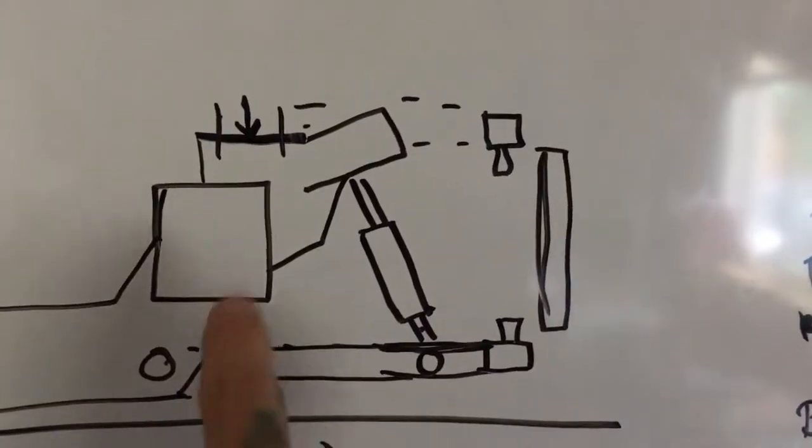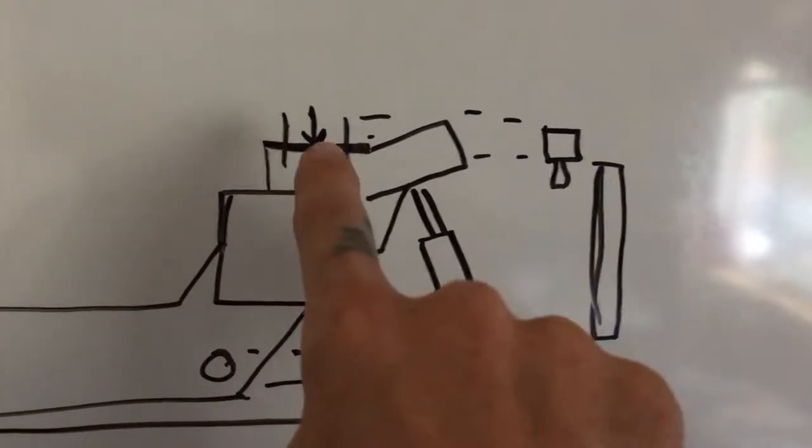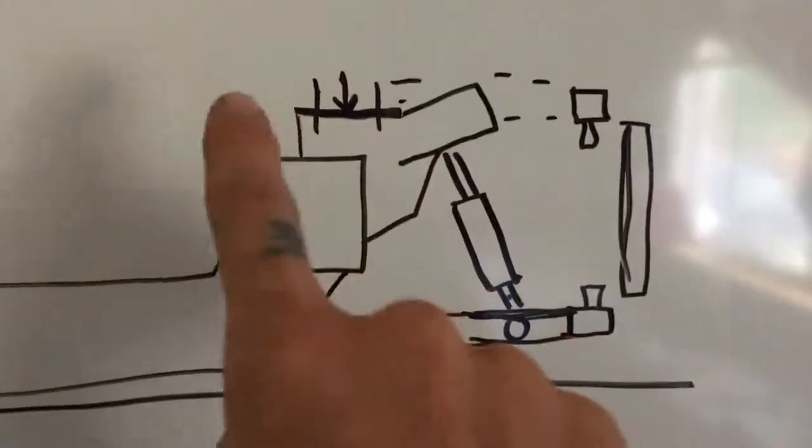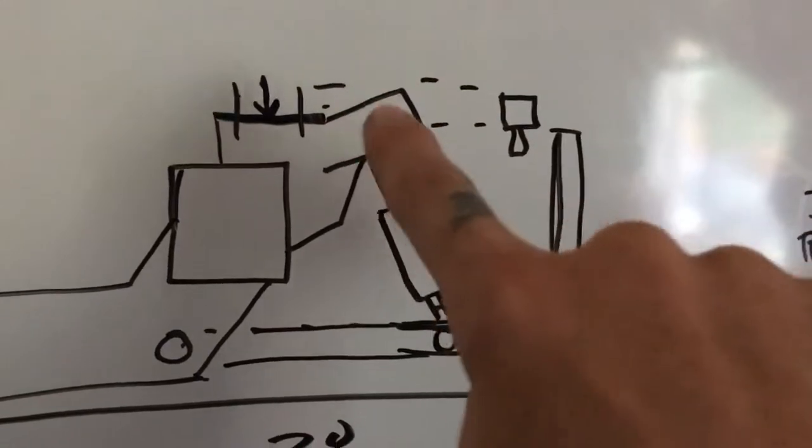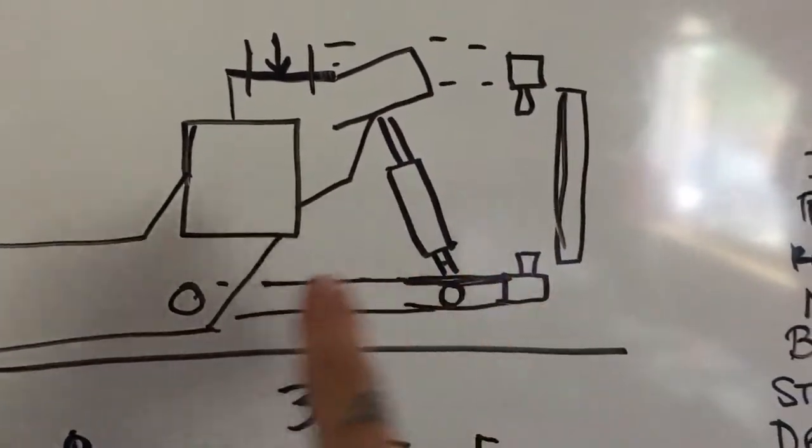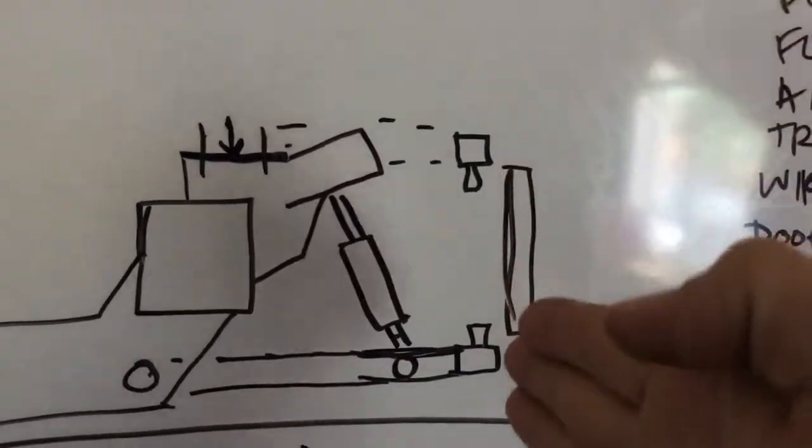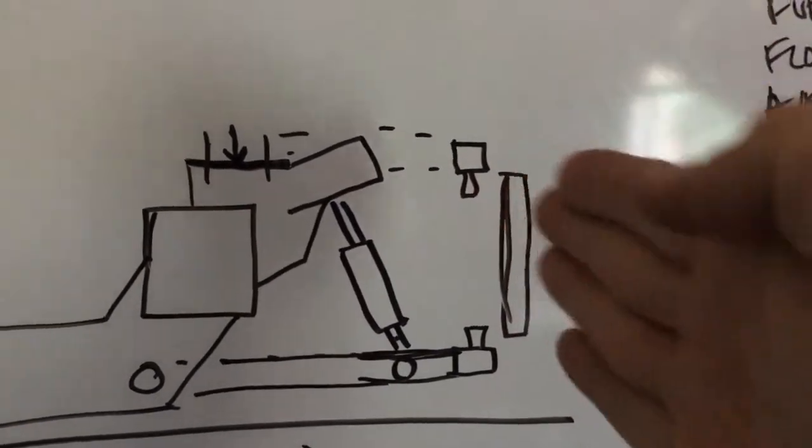And then what you want to end up with is that this flat is parallel and level to the passenger side. These don't matter. This needs to be level and the upper control arm needs to be level and then this will be zero on the camber.